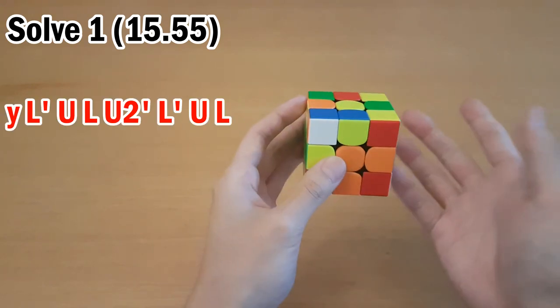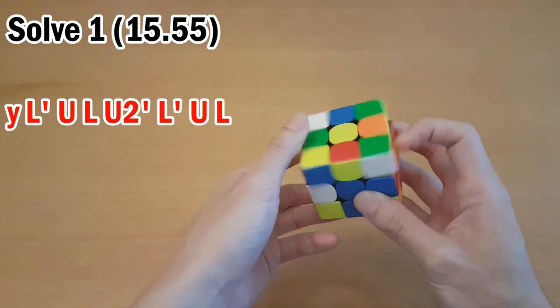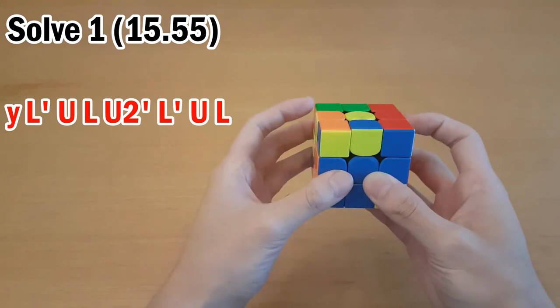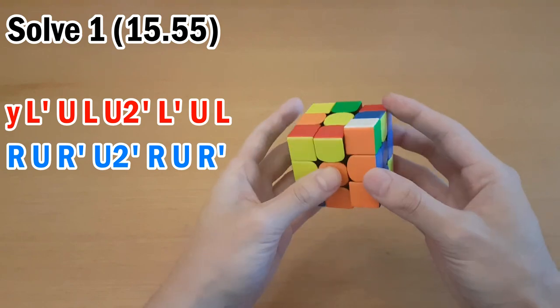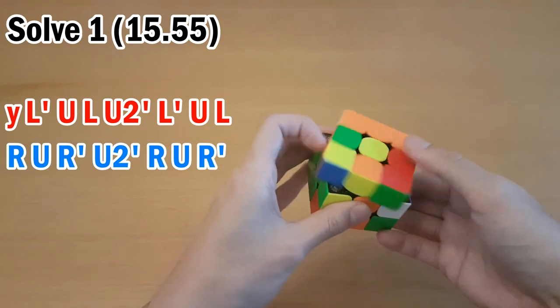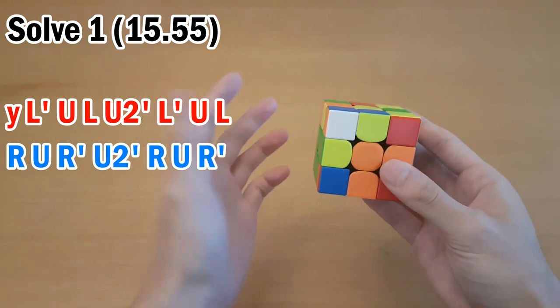Next you had this pair, and this is a common bad habit to insert it with a rotation like this. Instead, you can do it from here like this, which you actually use for the next pair, so I think you know that you can do this, you just weren't doing it out of a bad habit.